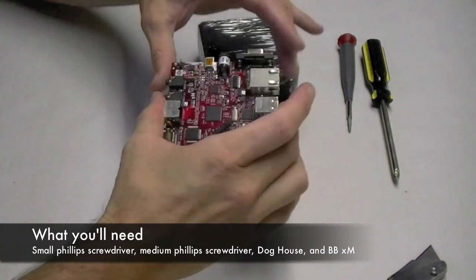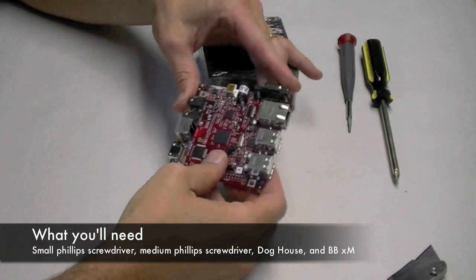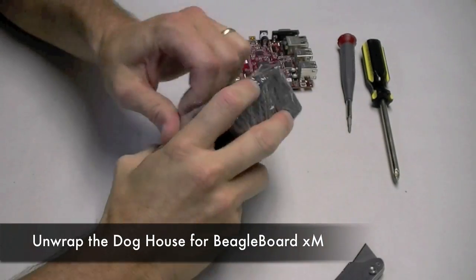You're going to need a small Phillips screwdriver and a medium Phillips screwdriver, your BeagleBoard XM and the eSawdust doghouse.